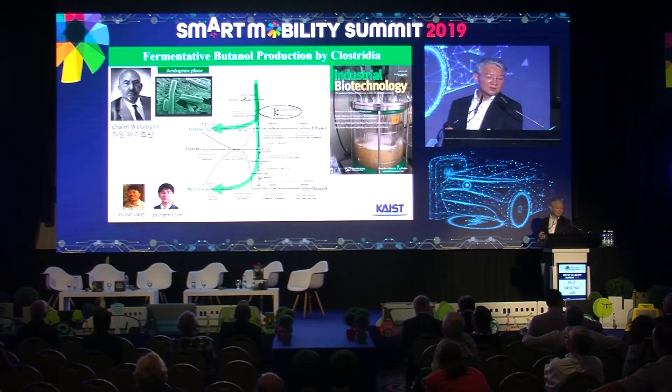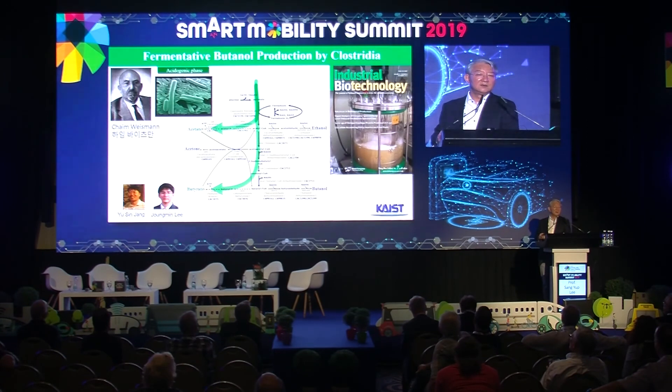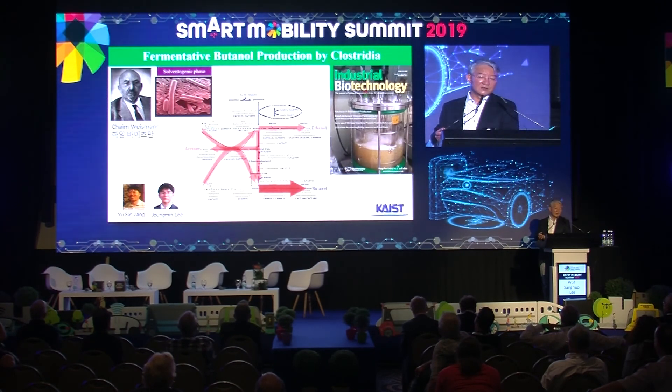I'm proud to say this is Haim Weizmann's process — Israel's first president. He developed the classic ABE fermentation process, where you feed glucose, xylose, and other carbon sources to a bacterium named Clostridium acetobutylicum, which is Weizmann's strain. It converts them first into acetic acid and butyric acid. Because the cells are producing so much acid, the growth medium becomes acidic, and then the cells have evolved to take these up via CoA transferase enzyme and convert them to butanol, acetone, and ethanol in an approximate ratio of 6:3:1.